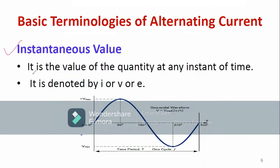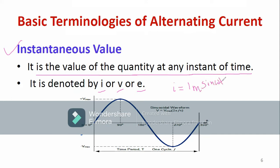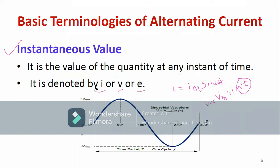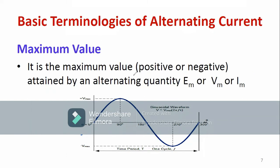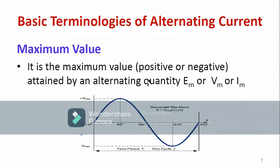What do you mean by instantaneous value? It is the value of the quantity at any instant of time. It can be denoted by small letter i, v, or p. The instantaneous value of current is i = Im sin(ωt), and for voltage v = Vm sin(ωt). As ωt (theta) varies, the value of v also varies — so with respect to the variation of theta, the instantaneous value changes. Maximum value or peak value is the maximum positive value attained by an alternating quantity, represented by Vm or Em.